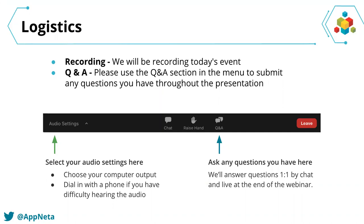First, you can change your audio settings from the audio settings menu. If you have trouble with the audio, you can switch between computer audio and phone call to get a dial-in number. Please use the Q&A section to ask us questions or if you'd like more detail on a topic. We've got a few others here that can answer your questions directly by chat throughout the event. We'll also take some questions live at the end.